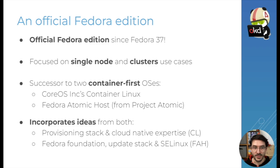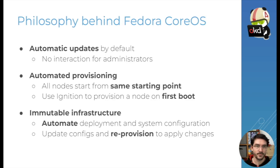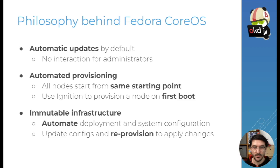It incorporates ideas from both of those projects — it takes the provisioning stack and the cloud-init expertise from Container Linux, and the Fedora foundation, the update stack, and SELinux from Fedora Atomic Host. The philosophy behind Fedora CoreOS is based on three pillars. The first one is automatic updates by default, so no interactions are needed by administrators. When you set up a node, you get automatic updates by default.